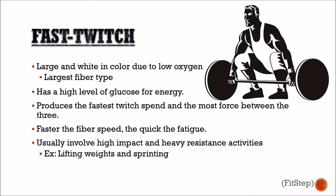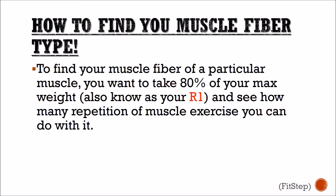Fast twitch muscles are white in color due to their lack of oxygen. Their main source of energy is glucose. It's the fastest twitch muscle of the three but fatigues really easily. Usually involved in high-impact and heavy resistance training, this muscle is activated during weightlifting and sprinting.